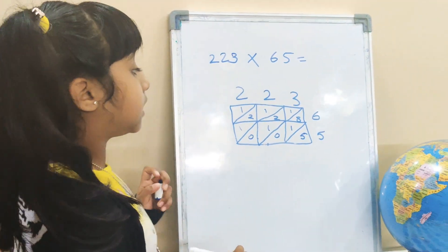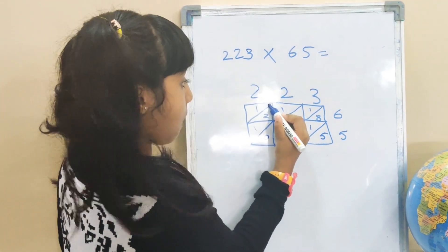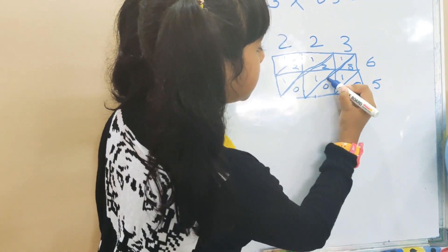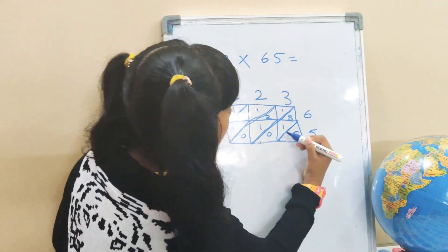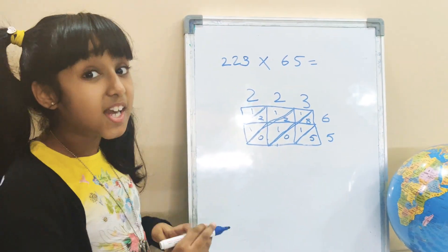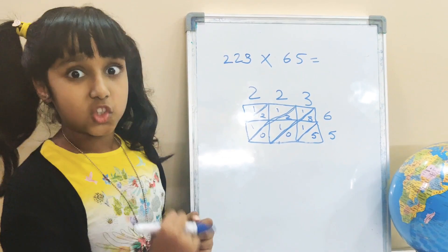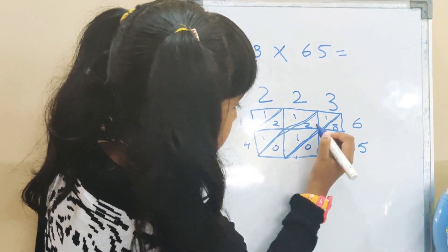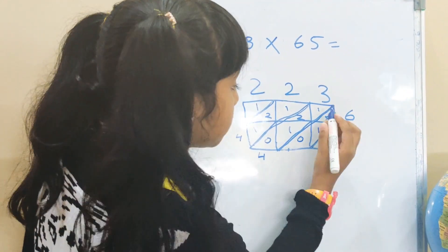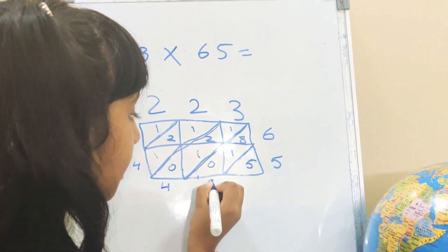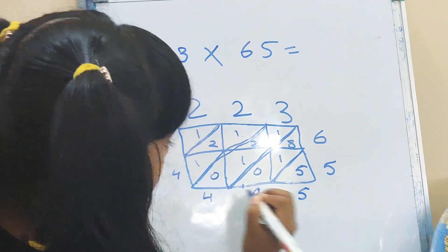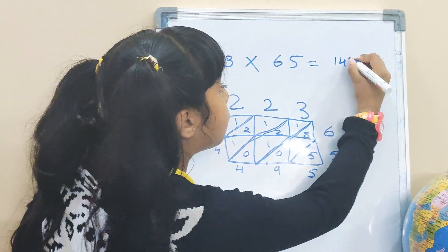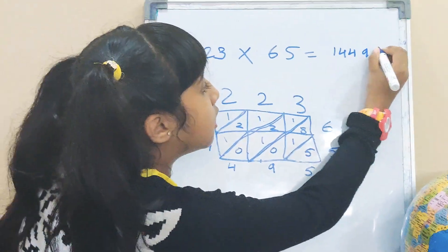Now we will make five big columns. Wow, five big columns are made! Now let us add each column: one, then 1+2+1, that is 4, then 1+2+1, that's again 4, then 9, and then 5. Now we will write these down: 14,495.